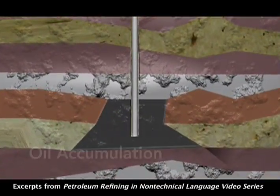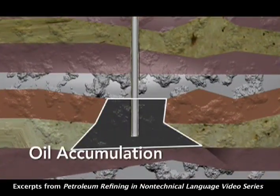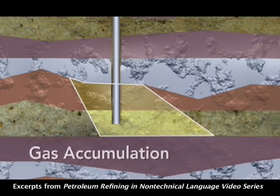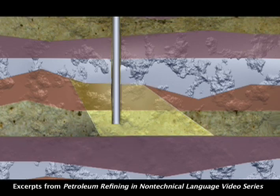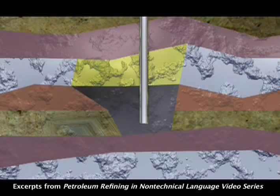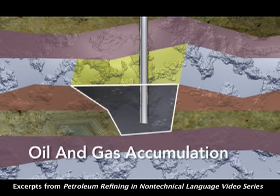Almost every oil reservoir has some gas dissolved in the oil, sometimes substantial amounts. Conversely, almost every gas reservoir has some oil dissolved in it. Sometimes a well can tap an oil formation that is topped by a gas cap, like that at Prudhoe Bay in Alaska.